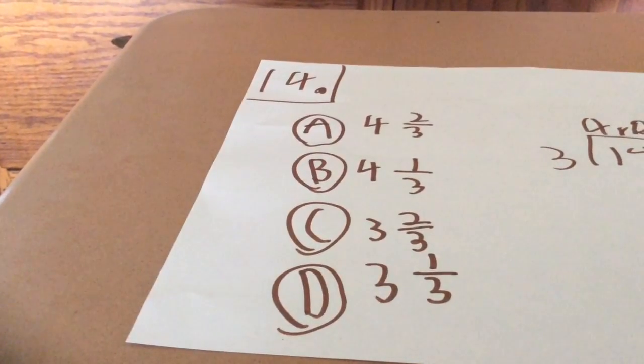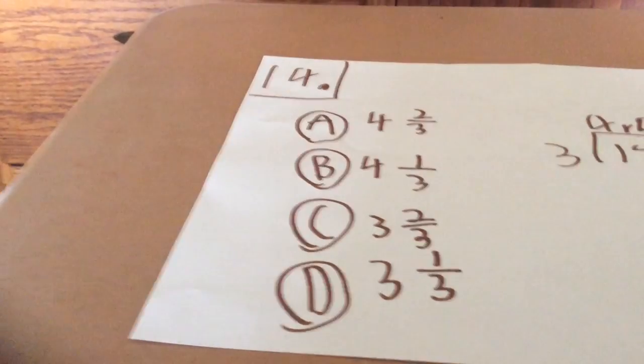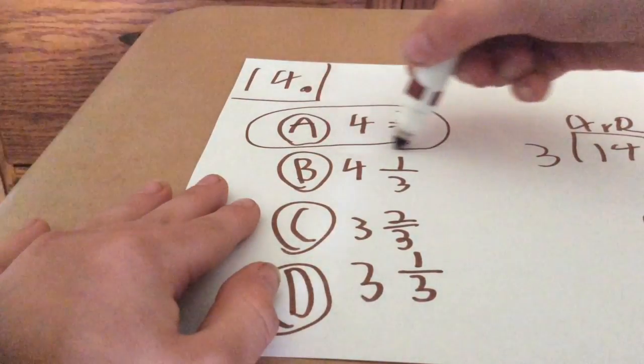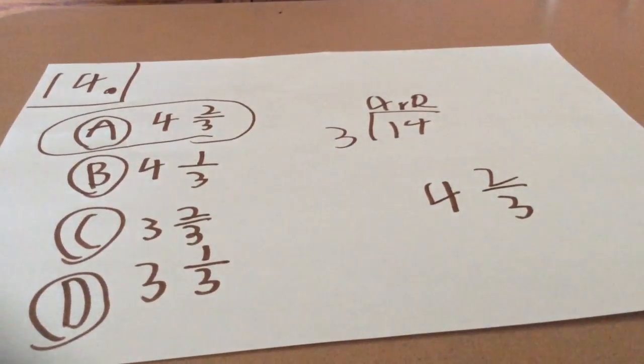So that's how you find out the answer. So A, four two-thirds. And that's how you do a mixed number problem.